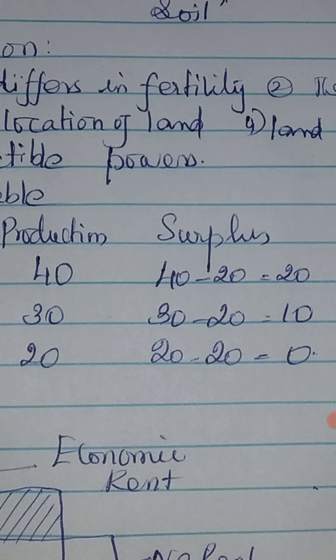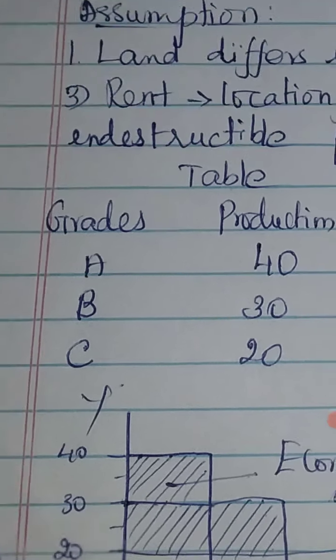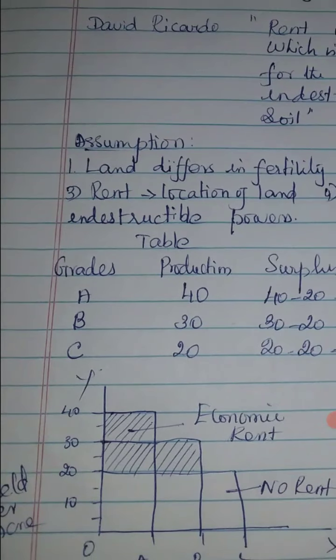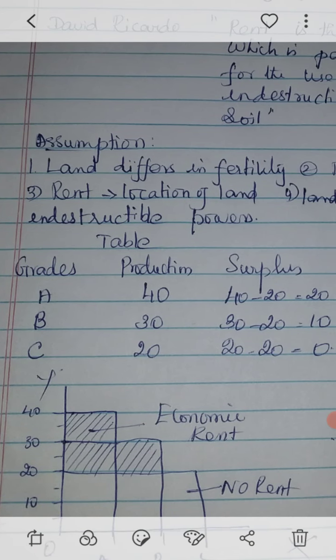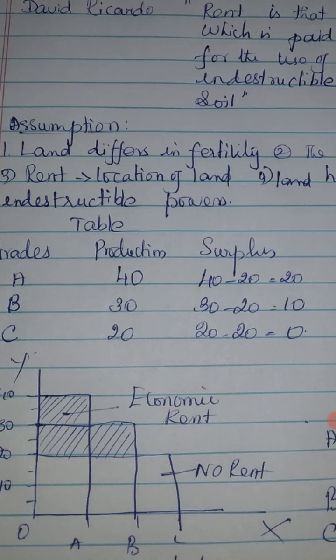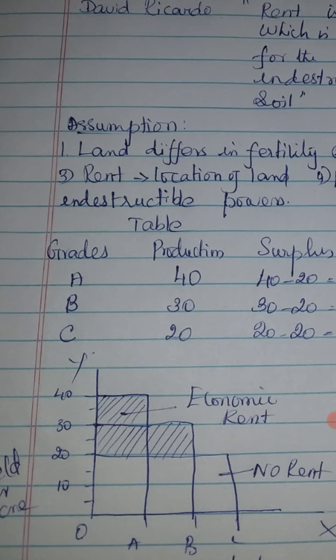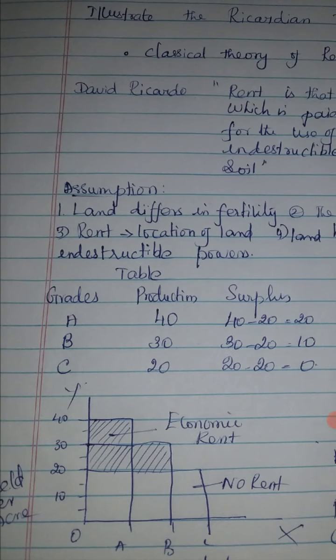If there is 20 stress, the land is B-grade. If there is 10 stress of the land, it is B-grade, producing 20 bags, and the rent is 0 — that is the waste land. We have to calculate the rent from that.